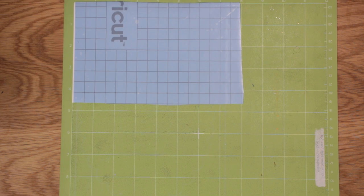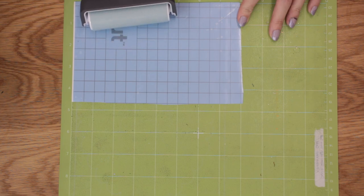So I'm using a green mat and I've got Cricut stencil vinyl and I also use my Cricut brayer to secure it to the mat.